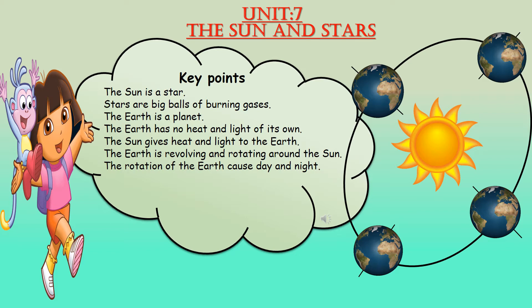The Earth is revolving and rotating around the Sun. As you can see in the picture, it is rotating in an oval shape around the Sun on its axis. An axis is an imaginary line — as I have drawn — around which the Earth rotates. This rotation of the Earth causes day and night. When the part of the Earth facing the Sun has daytime, all the parts facing away from the Sun have nighttime because they are not getting sunlight.